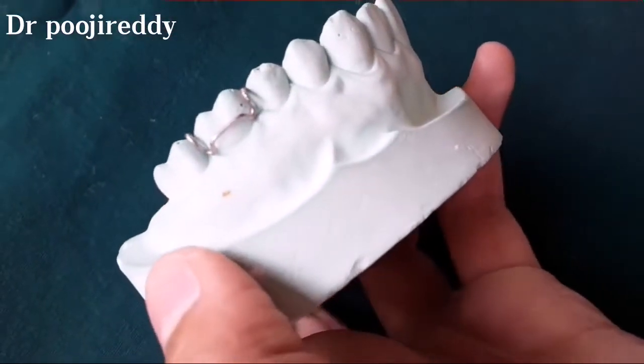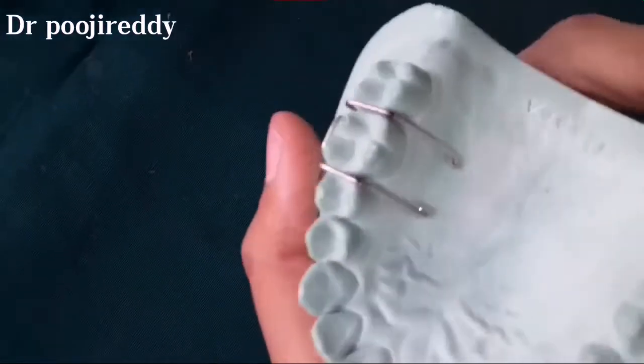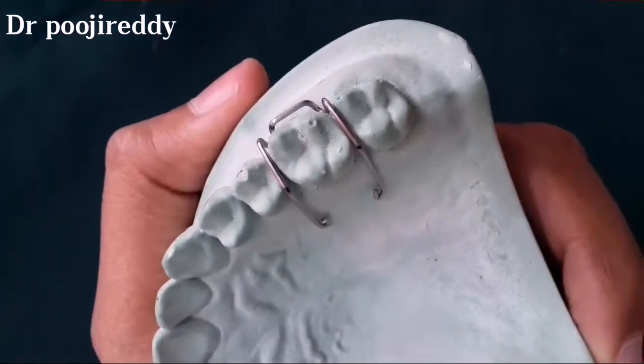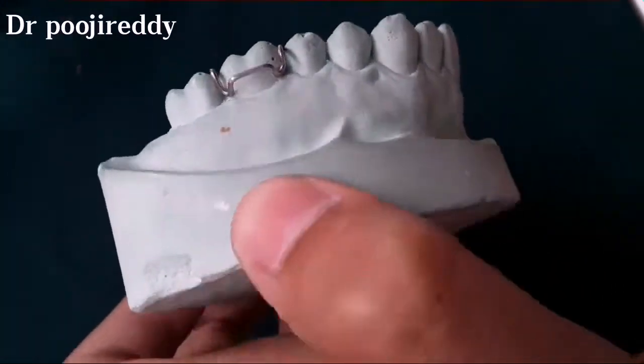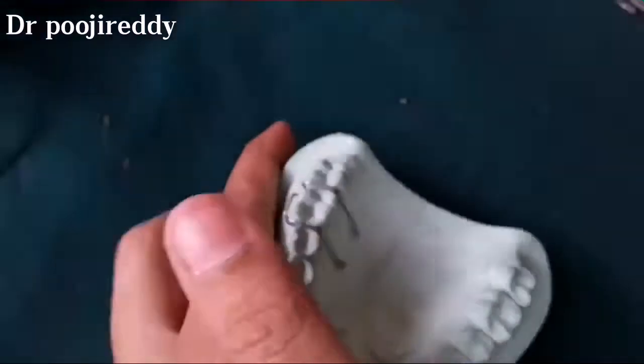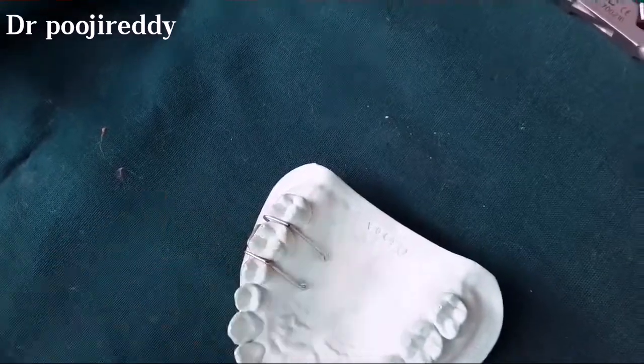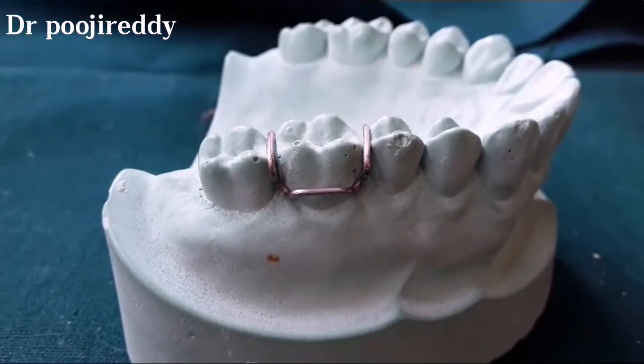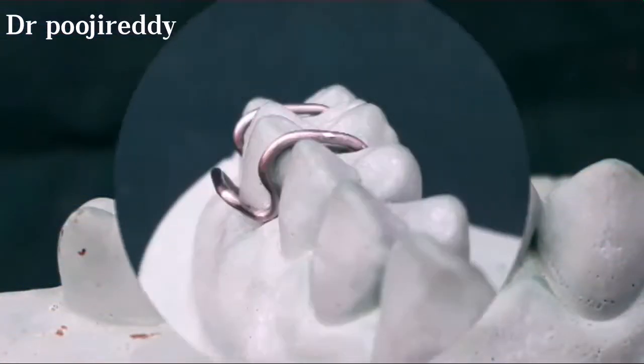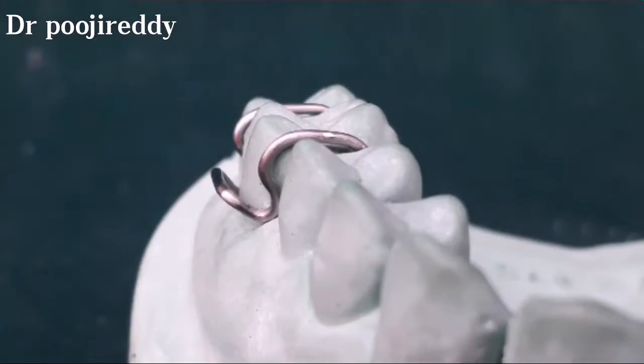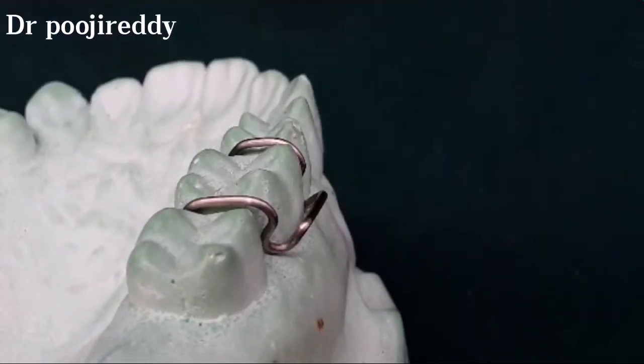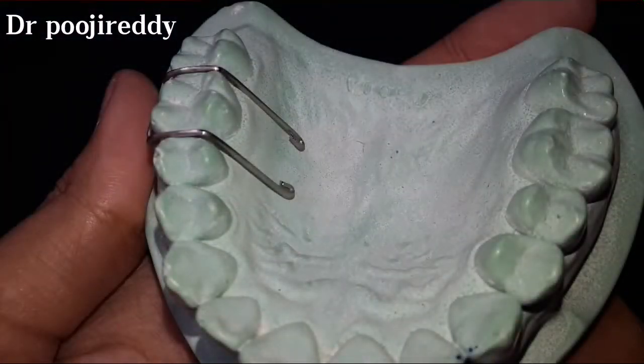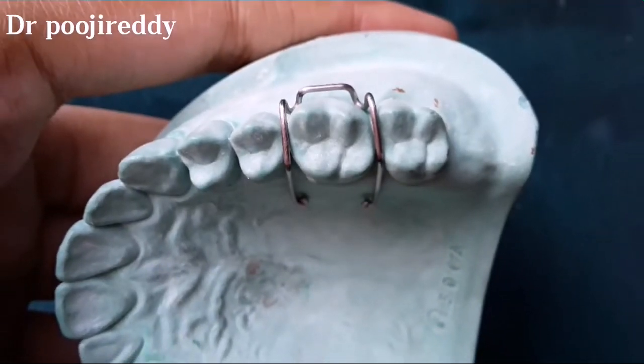And yeah, finally Adams clasp fabrication is now completed. The Adams clasp should be passive to the cast, it should not be active. And yeah, this is how the Adams clasp looks like after the fabrication. The free end of the Adams clasp should adapt like this as I am showing right now, in between the tooth like this. This is the 45 degree angulation in mesial and distal undercuts, and this is the retentive arm. And this is the occlusal view.